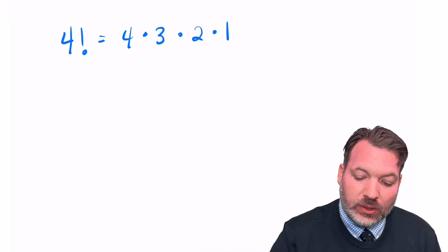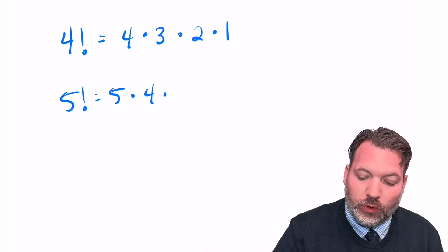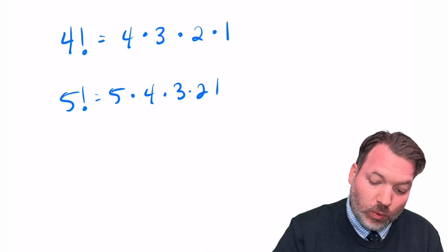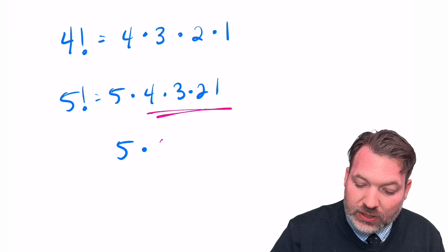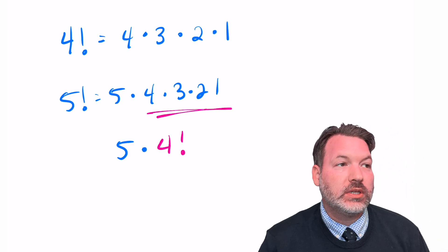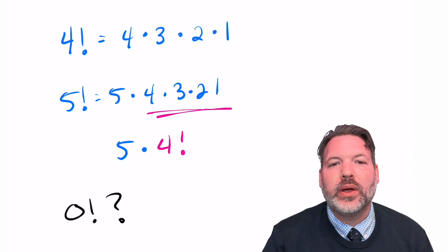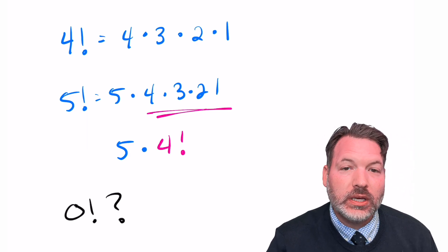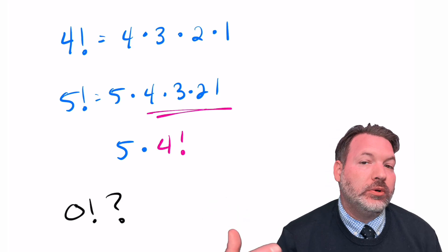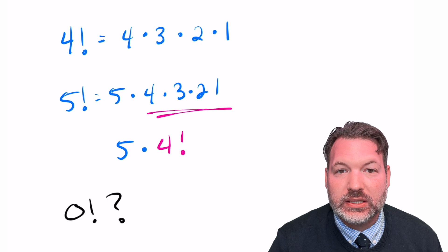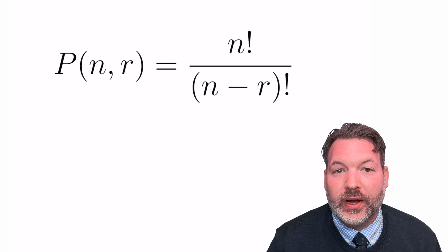Factorials have all kinds of interesting properties. 5 factorial, which of course would be 5 times 4 times 3 times 2 times 1, is itself the same as 5 times 4 factorial, since we can see the 4 times 3 times 2 times 1 right there in its definition. It would appear as if we really can't evaluate what 0 factorial is using this definition, because 0 is not a natural number — we can't count down to 1 beginning at 0. So we might presume the best thing to do is to say there's just no such thing as 0 factorial.